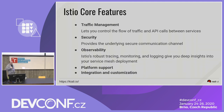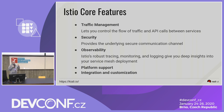To sum up Istio core features: there is traffic management to control the traffic flow between services, security for the underlying communication channel between services, and observability for tracing, monitoring, and logging. Istio is platform independent, and its components are highly integrable and customizable.